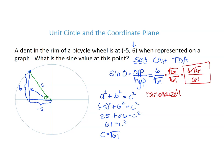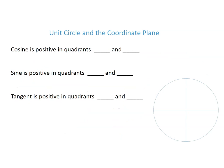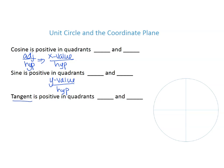Let's talk about cosine and sine. Cosine is adjacent over hypotenuse, which correlates to the x value over the hypotenuse. Sine, on the other hand, corresponds to the y value over the hypotenuse. And tangent is the y value over the x value.